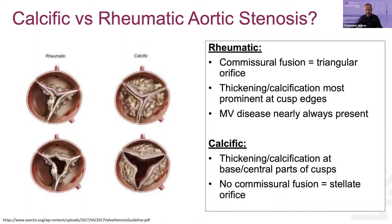Another concept you read about frequently is aortic sclerosis. The definition of aortic sclerosis is a calcified thickened valve with normal leaflet motion and velocities typically less than 2.5 meters per second.